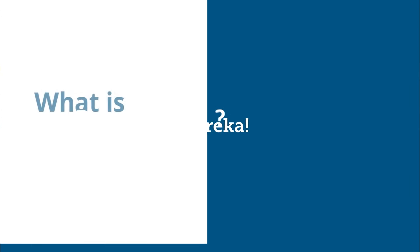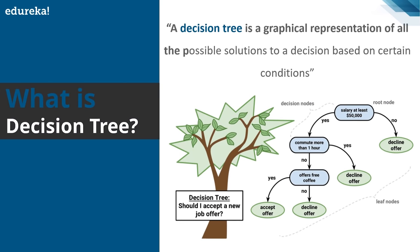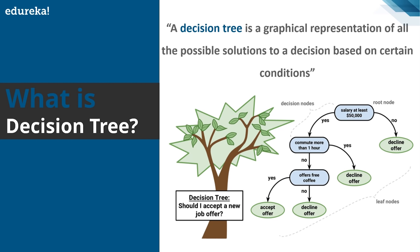A decision tree is a graphical representation of all possible solutions to a decision based on certain conditions. It is called a decision tree because it starts with a root and then branches off to a number of solutions — just like a tree starts from a root and grows its branches. In a decision tree, the root keeps growing with increasing decisions and conditions.